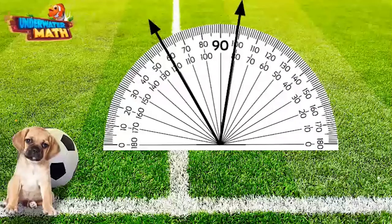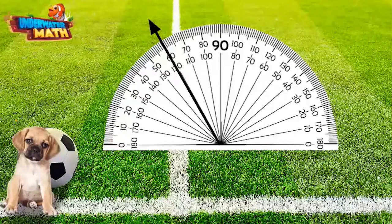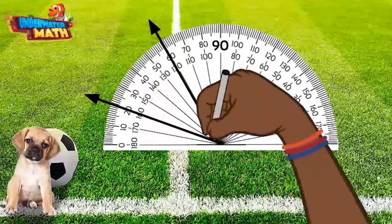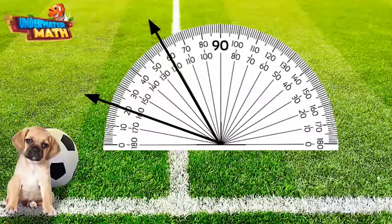This shows a 40 degree angle. If we go the other way, we add 40 degrees to 120 degrees, which lands our ray on 160 degrees. This is also a 40 degree angle.